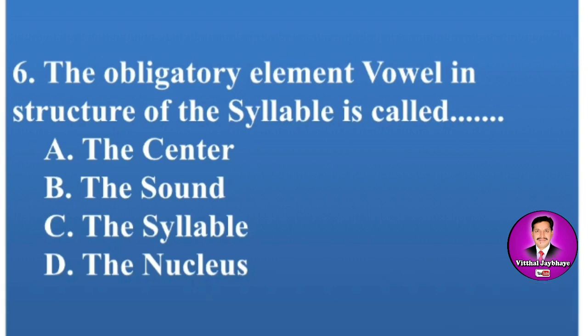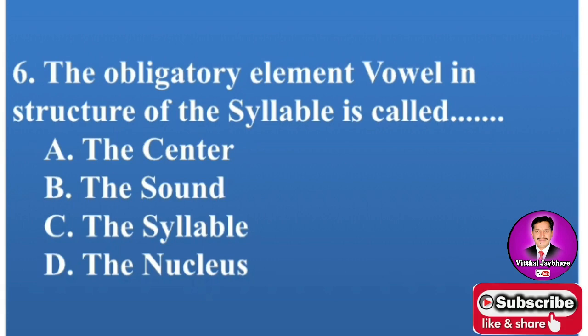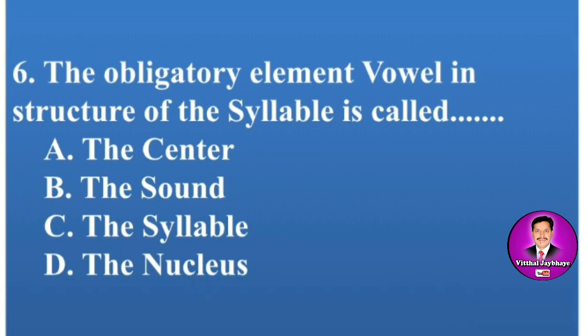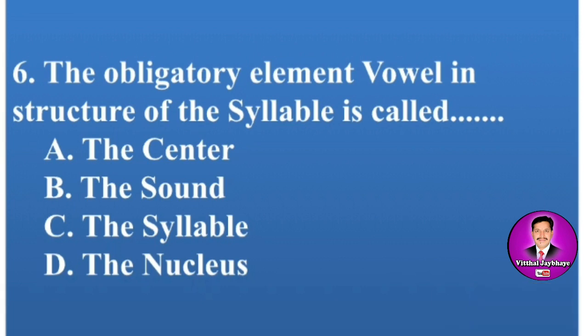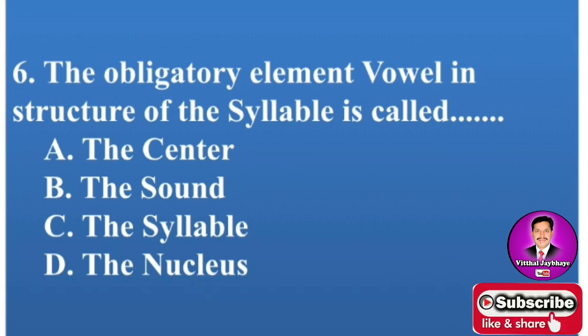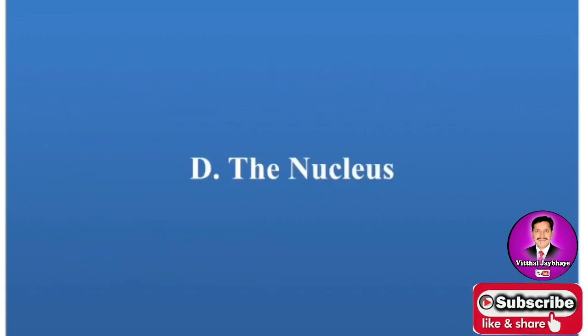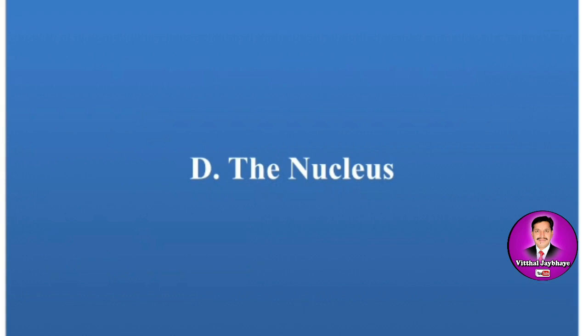Next MCQ: The obligatory element — vowel — in the structure of the syllable is called dash-dash-dash. Options are A: the center, B: the sound, C: the syllable, D: the nucleus. Read the detail in the chapter of the syllable. The correct answer is D — the nucleus.